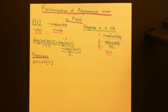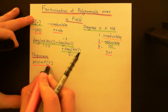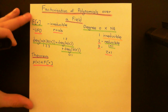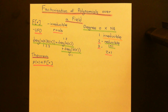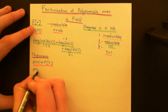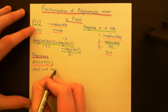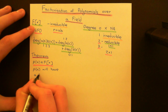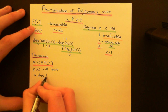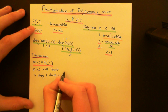Let P of X be a polynomial from our ring of polynomials with coefficients in the field capital F. The theorem is that it will have a divisor of degree 1 — I'll write deg for degree — a degree 1 divisor, and it's an if and only if condition.